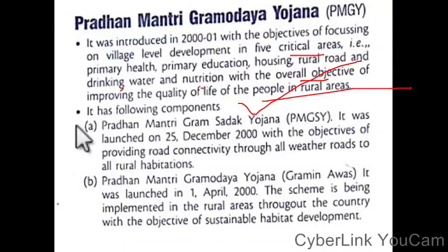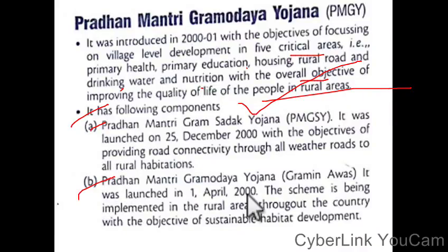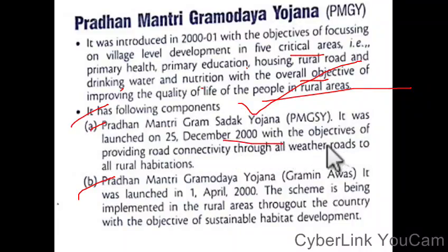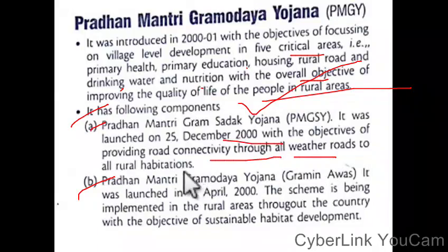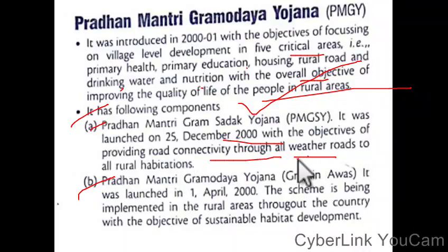The following components — the first one is Gramsha Mottri, launched in the 20th century. Its objective is road connectivity — providing all roads to all rural habitations, giving road connectivity through all roads to all rural habitations.